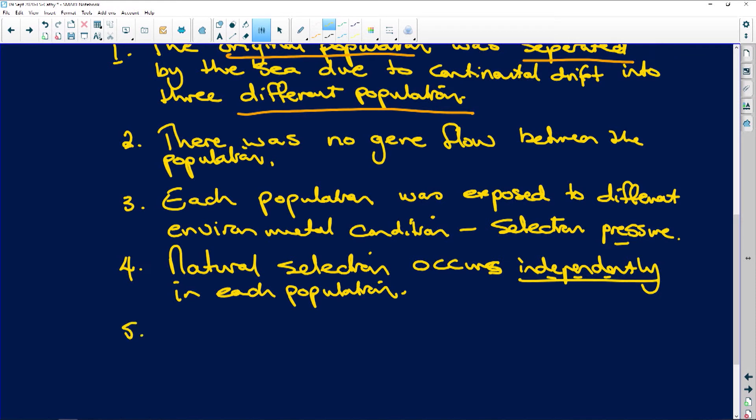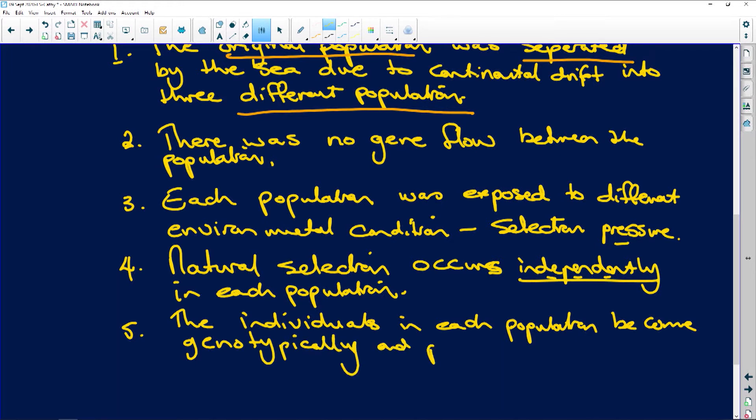Number five: The individuals in each population, they become genotypically - in other words in their genes - and phenotypically - in what you see, in their appearance - different from each other.